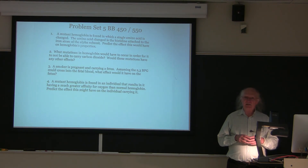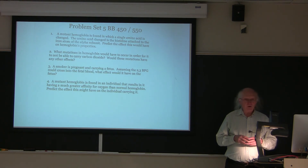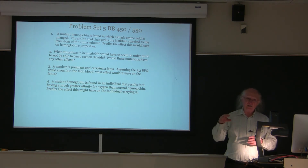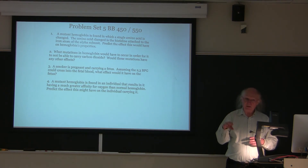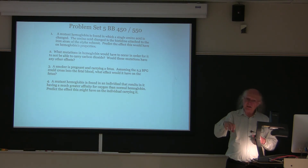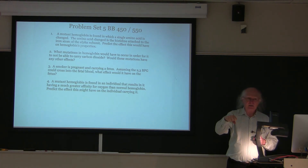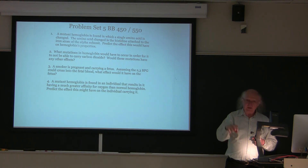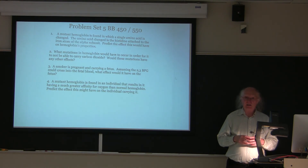If you change the amino acid that's attached to the iron in the hemoglobin, the new amino acid would not properly attach to the iron. So consequently, when oxygen comes in to the heme region of one of the subunits of hemoglobin, the oxygen would pull the iron up as described in class. But the pulling up of the iron would not be able to pull up the amino acid attached to the iron, because there would be no amino acid attached to the iron.